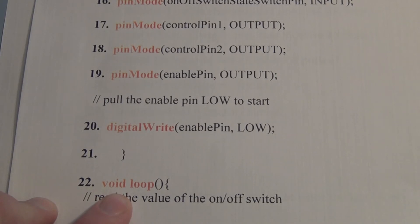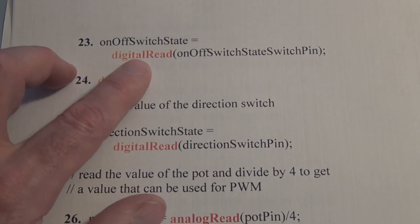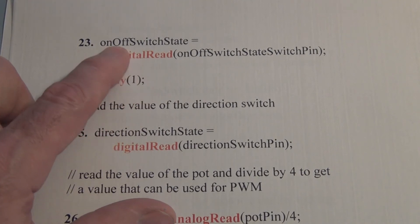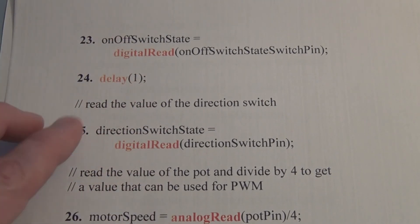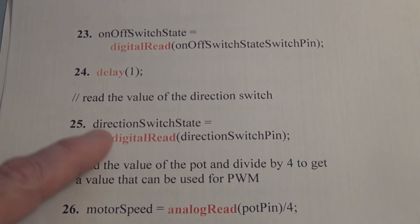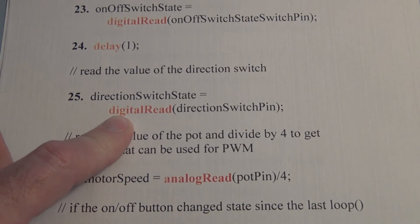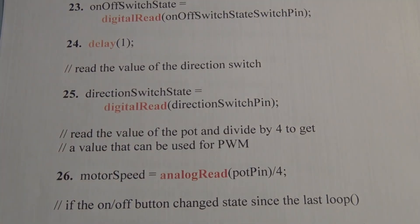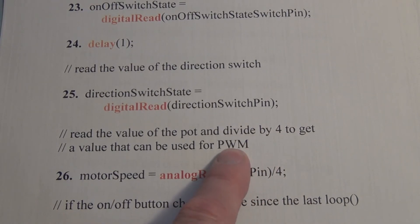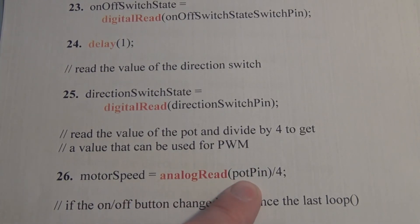Next we start a loop function and this is where we're going to start comparing previous states of the on off switch, the direction switch to the current states. So we do a digital read of the current state of the on off switch and put it into variable on off switch state. We have a delay of 1 millisecond. Then we have a digital read of direction switch state and that value gets stored in direction switch state. Next we're going to read the value on A0 from the potentiometer and we have to divide that by 4 to get a usable number that we use for the pulse width modulation value. So we do an analog read on pot pin, divide by 4 and store that value in motor speed variable.